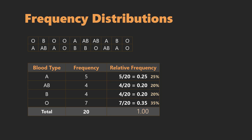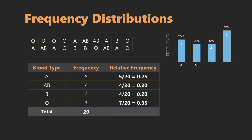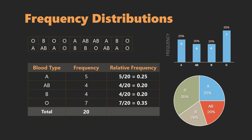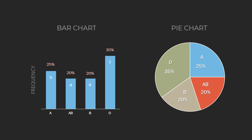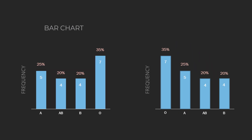Because the variable is categorical, commonly used graphical representations are bar charts and pie charts. Bar charts use bars to display either frequencies or proportions in each category, while pie charts use slices to display proportions that each category represents relative to the whole. When we organize the bars in a bar chart in descending order of magnitude, we refer to it as a Pareto chart.